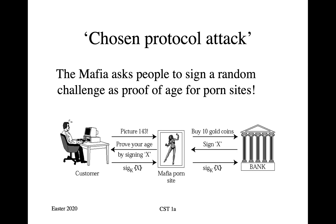So here is how these two protocols could be used back to back. The basic idea is that if there's a protocol you want to attack, you design another protocol which, if it's allowed to reuse the same keys, can be used to attack that by fooling the users. Suppose, for example, the mafia sees a protocol like the one on the previous page, and they say, let's abuse this by having an age verification system for our porn site.